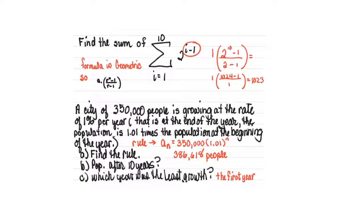The population after 10 years, we're going to put a 10 in at the power. We get 386,618 people. If you put in a couple of terms, you'd see that the year that had the least growth was the first year. Exponentially, of course, it's going to get more and more.